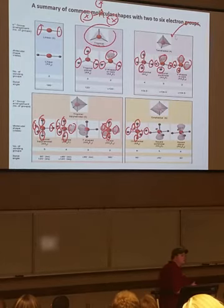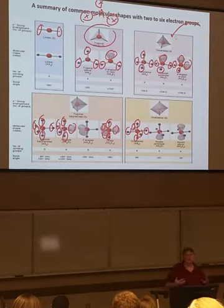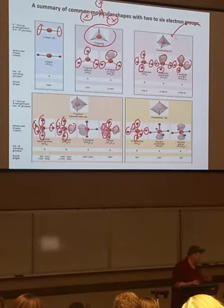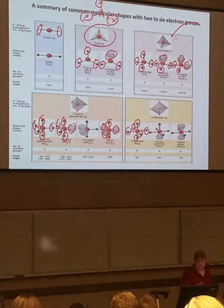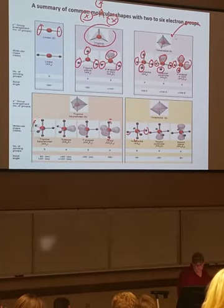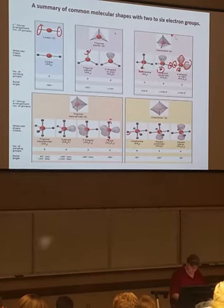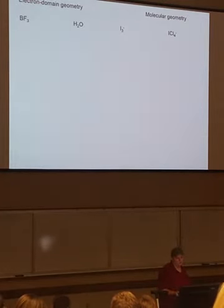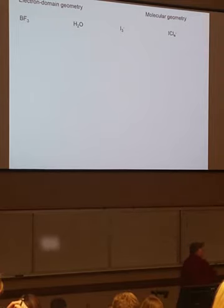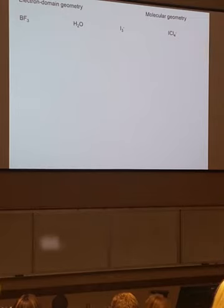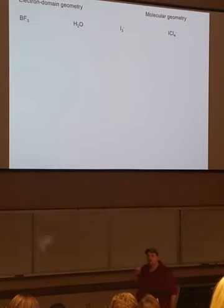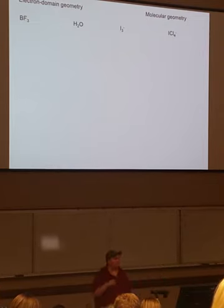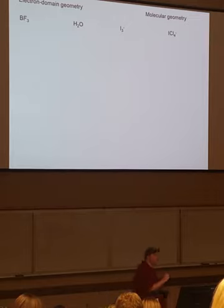Figuring out the shapes of molecules means figuring out how many areas of repulsion it has, and then some memorization. It's easier to memorize things in categories — that's why I gave you this sheet. So let's practice and do some of these molecules, and we're going to figure out their electronic geometry and their molecular geometry. Electronic geometry refers to the number of repulsion areas.